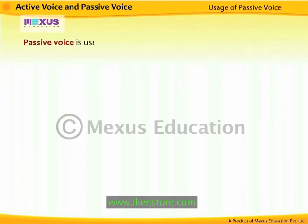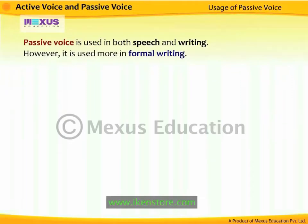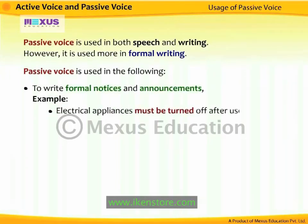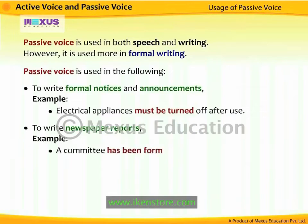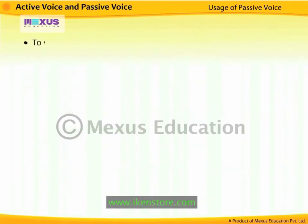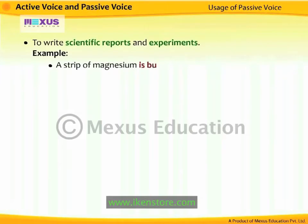Passive voice is used in both speech and writing; however, it is used more in formal writing. Passive voice is used to write formal notices and announcements — for example, 'Electrical appliances must be turned off after use.' To write newspaper reports — for example, 'A committee has been formed by the company.' To write headlines and advertisements — for example, 'Two injured in road accident.' To write scientific reports and experiments — for example, 'A strip of magnesium is burnt in oxygen.'